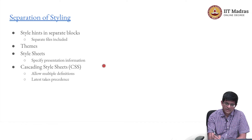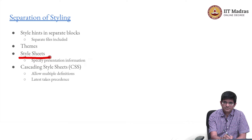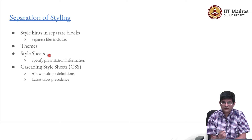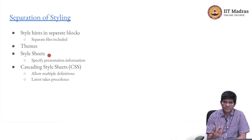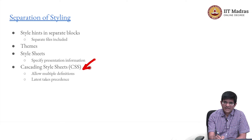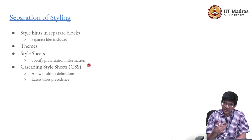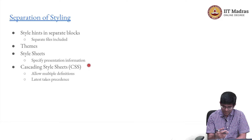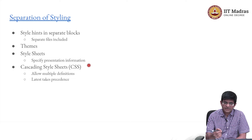The concept brought in was: why not use something called a style sheet, which contains just presentation information? A style sheet has descriptions of different tags and says how each of these tags needs to get represented or displayed on a screen. That is where Cascading Style Sheets, or CSS, came into the picture. Why cascading? You could have multiple style sheets, each of which might have some overlap with the other. The latest or last definition is the one that takes precedence.